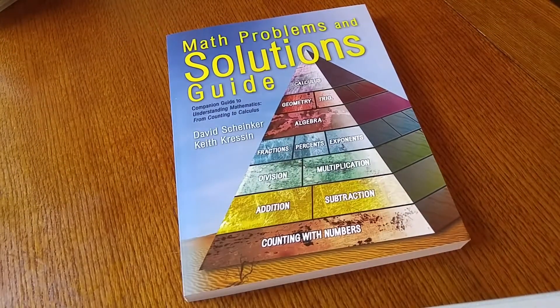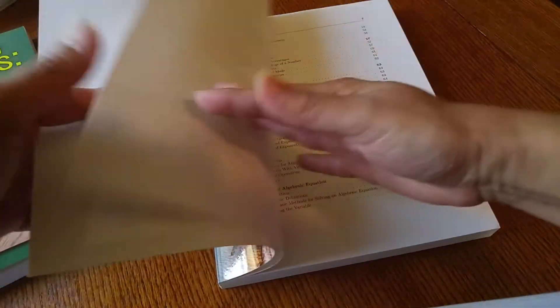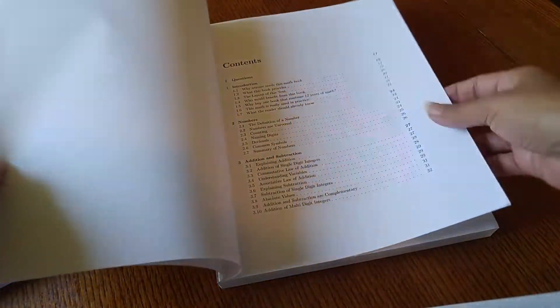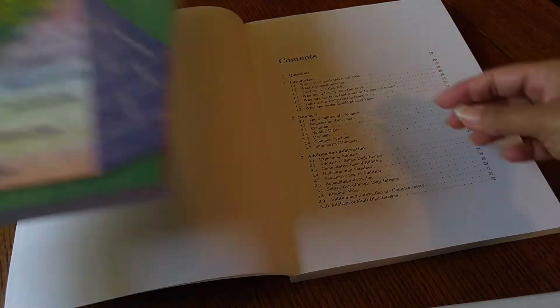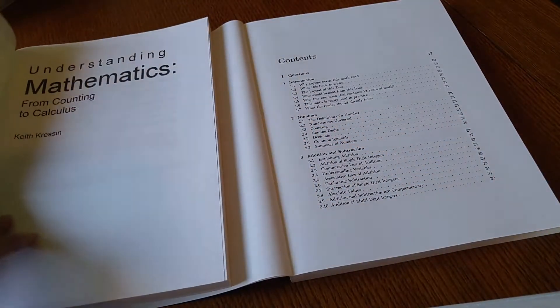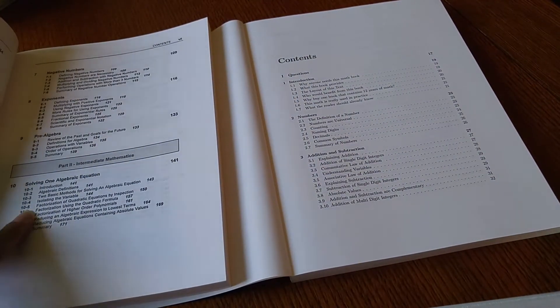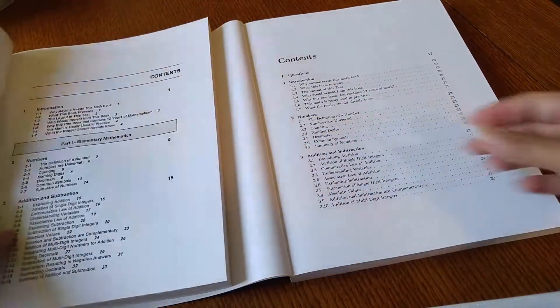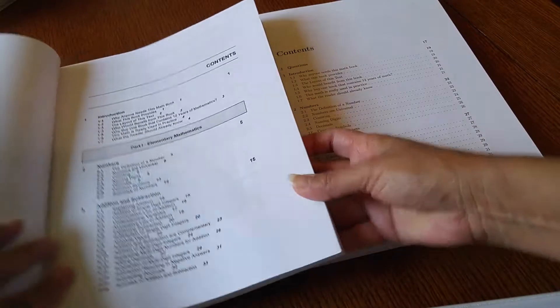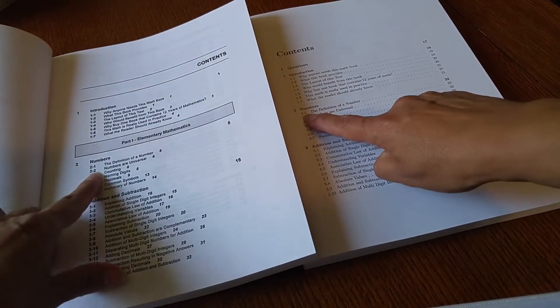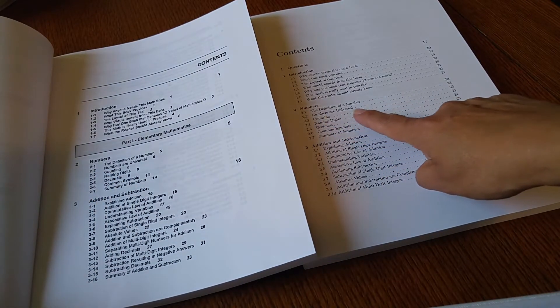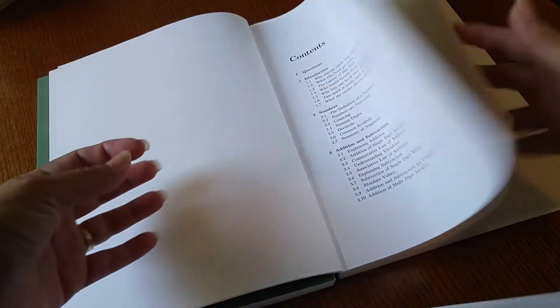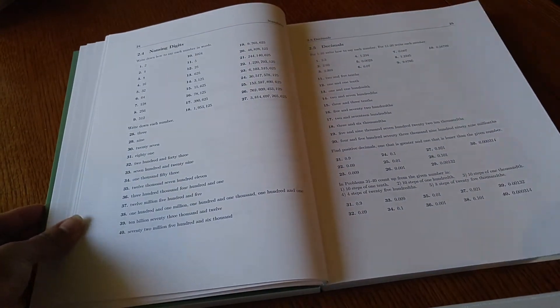And then here's the Math Problem Solutions Guide. Introduction, numbers, addition. So here are those like 2.1 and so forth. This one has a hyphen, though. I'll put them side by side so we can get an idea. So 2.1, the definition of a number - the definition of a number. Numbers are universal, 2.2, numbers are universal, and so forth. There's decimals.